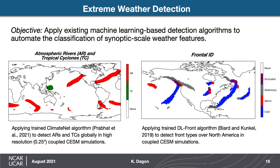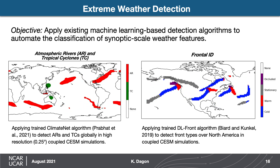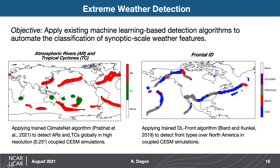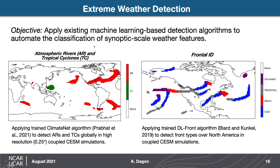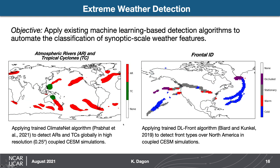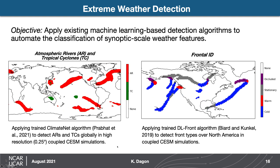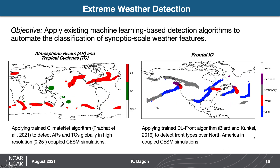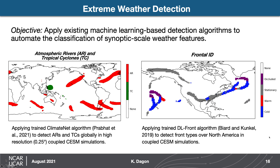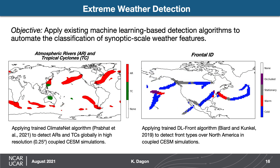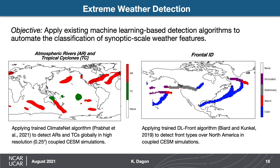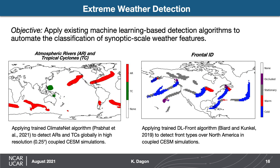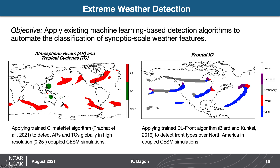We've applied these algorithms to CESM model output to automatically detect different weather features. On the left, I'm showing an example of detecting atmospheric rivers in red and tropical cyclones in green in global high-resolution CESM simulations. On the right, I'm showing a different algorithm trained specifically to detect fronts and different front types in climate model output over North America, where we're also able to successfully distinguish these features from the CESM output.